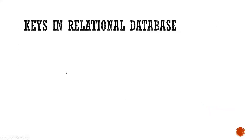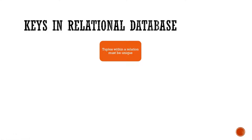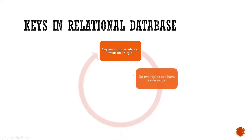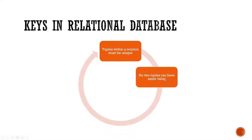What are the keys in relational database? There are different types of keys and their usages discussed in this chapter. The meaning of keys is that tuples within a relation must be unique. At the designing time of the table when we are creating a table, we need to make sure that the records are unique in the relational database. No two tuples can have the same value.